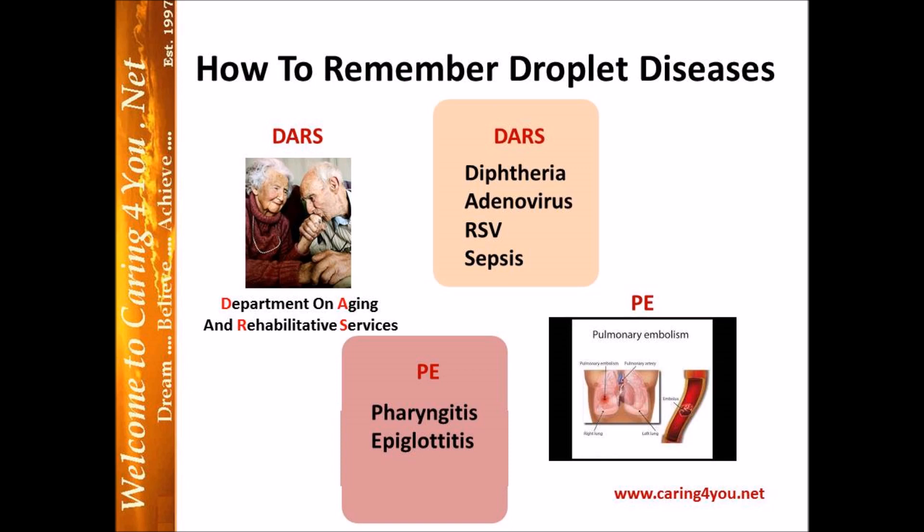I also have P.E. — look at the Pulmonary Embolism picture. When you think of the pulmonary embolism picture for droplet precautions, I want you to remember pharyngitis and epiglottitis. Simple as that — let's not make it any harder. But there definitely is more than just four or five.